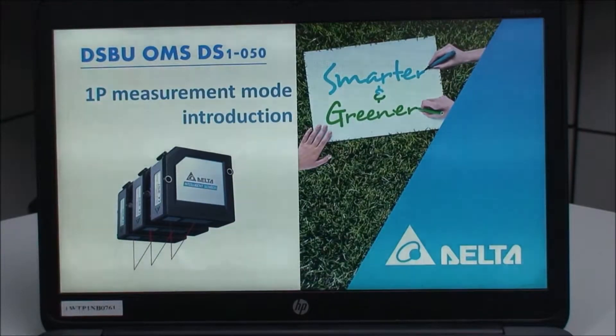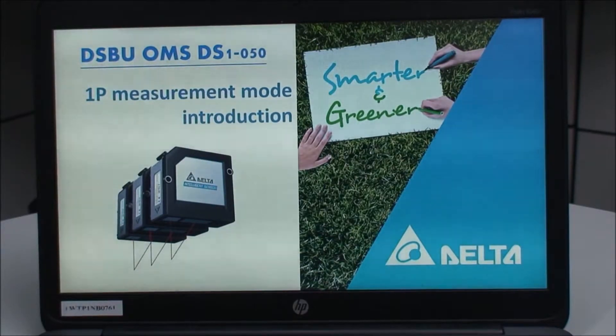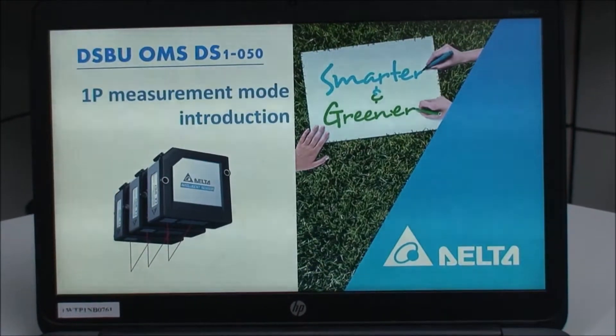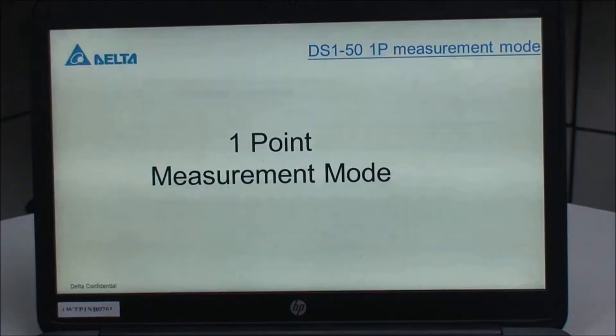Hello, my name is Kevin. Welcome to watch this video. Today I'm going to introduce you the laser displacement sensor DS150 model, the 1P measurement mode. This product was developed by Delta company DSBU OMS team. The 1P measurement mode stands for one point measurement mode.